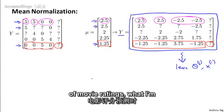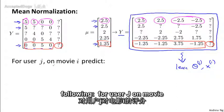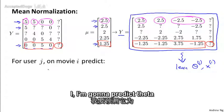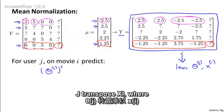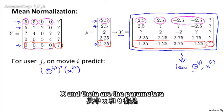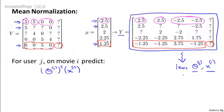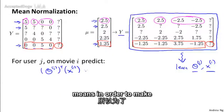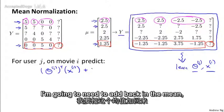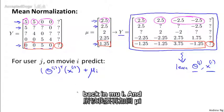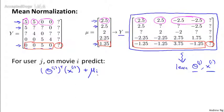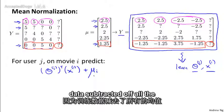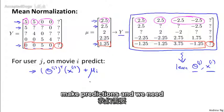When I want to make predictions of movie ratings, what I'm going to do is the following. For user j on movie i, I'm going to predict theta j transpose xi, where x and theta are the parameters that I've learned from this mean normalized data set. But because on the data set I had subtracted off the means, in order to make a prediction on movie i, I'm going to need to add back in the mean mu i.